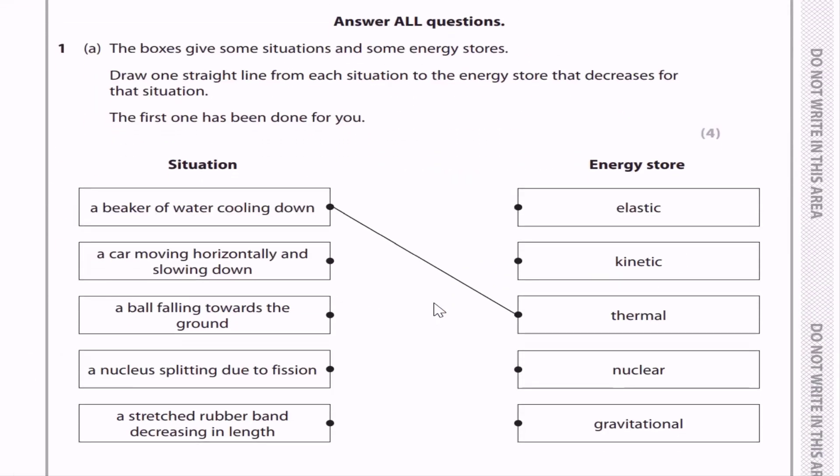Question 1. Answer all the questions. Question 1a: The boxes give some situations and some energy stores. Draw one straight line for each situation to the energy store that decreases for that situation. The first one has been done for you. A beaker of water cooling down — energy store decreases: thermal energy.